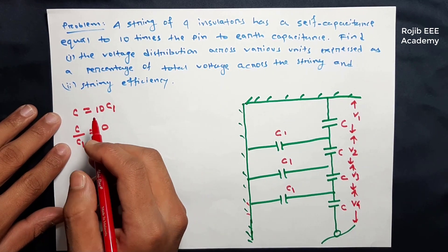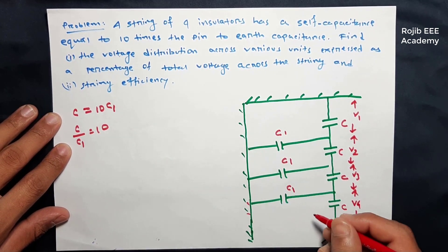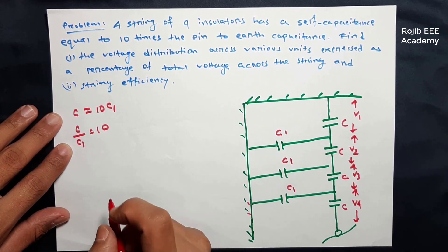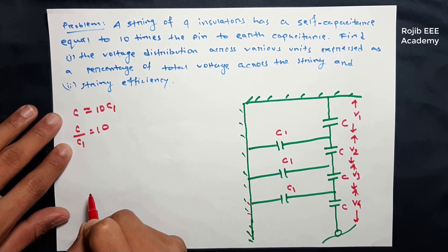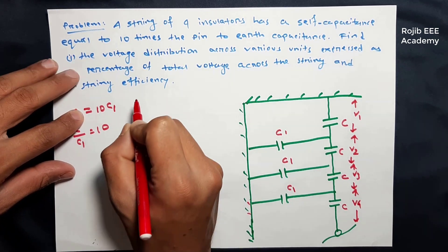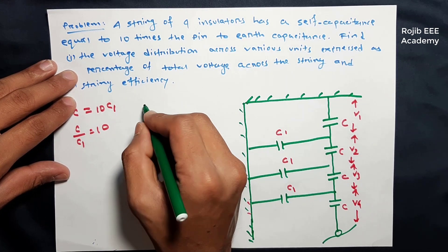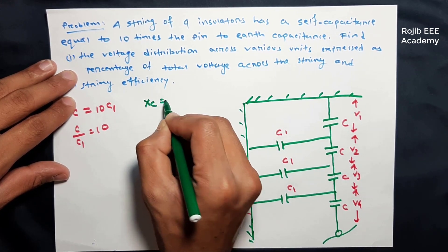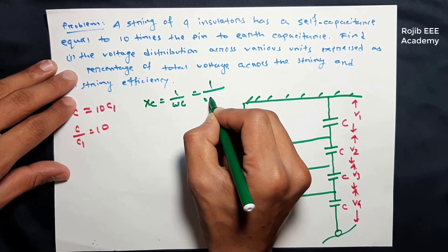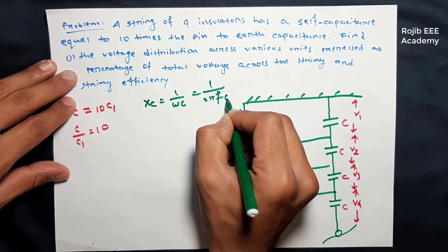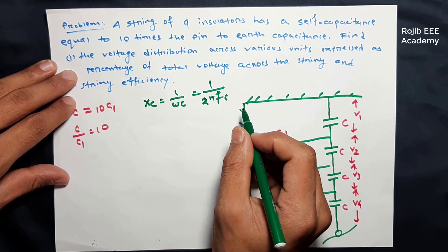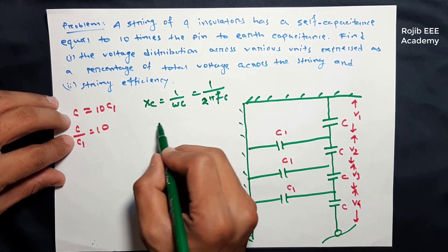Now we are looking at V3 and V4. We will write the result for V4 in terms of impedance. The reactance XC is given by 1 divided by 2π f C, and we will use this to find XC for V4.